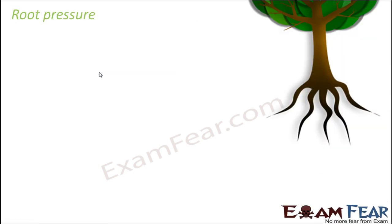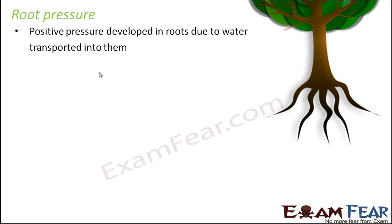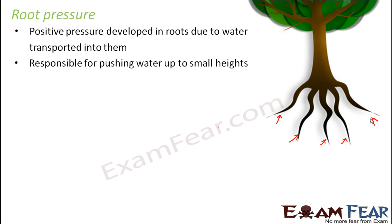Let us start with root pressure. Root pressure is a positive pressure that is developed in roots due to water being transported into them. When root hairs absorb water from the soil, more and more water enters inside the roots. This is similar to a cell swelling up when water enters. The water develops a pressure inside the root, and that pressure is known as root pressure. It is responsible for pushing water up to small heights.